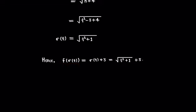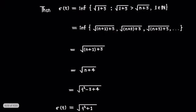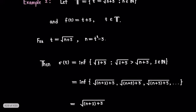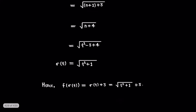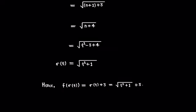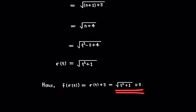Hence f(σ(t)) = σ(t) + 3. Since f(t) = t + 3, we replace t with σ(t) to get f(σ(t)) = σ(t) + 3, and since σ(t) = √(t² + 1), the forward shift of the given function f for the given timescale equals √(t² + 1) + 3.